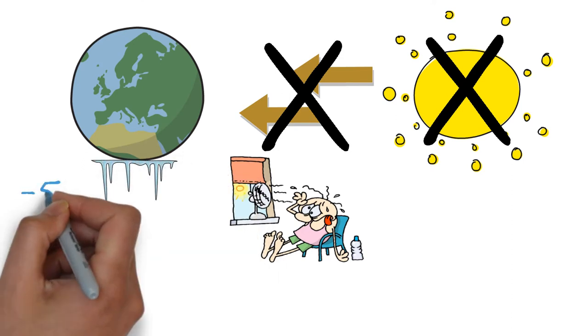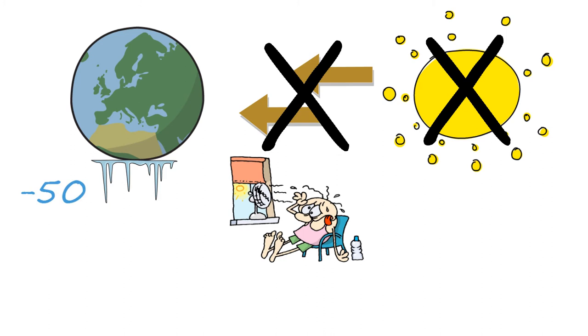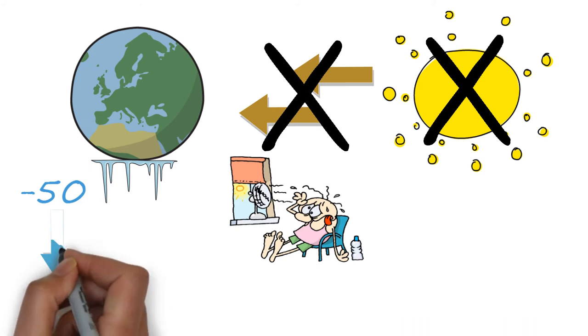The temperature of the earth would drop dramatically and rapidly. Like seriously, we'd be about minus 50 degrees on average within the first year, and the temperature would only continue to drop.